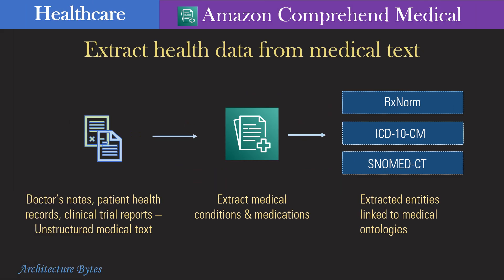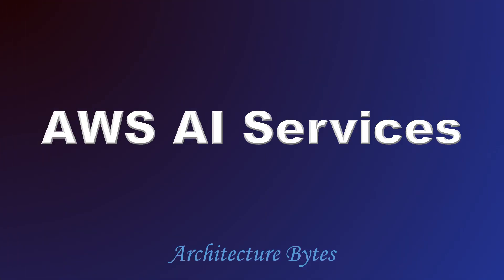Amazon Comprehend Medical extracts medical information from unstructured medical texts like doctor's notes, radiology or clinical reports, prescriptions, etc., and identifies relationships between extracted health information and links it to medical ontologies. It is a natural language processing service that uses machine learning models pre-trained to understand health data. That was our introduction to AWS AI Services.